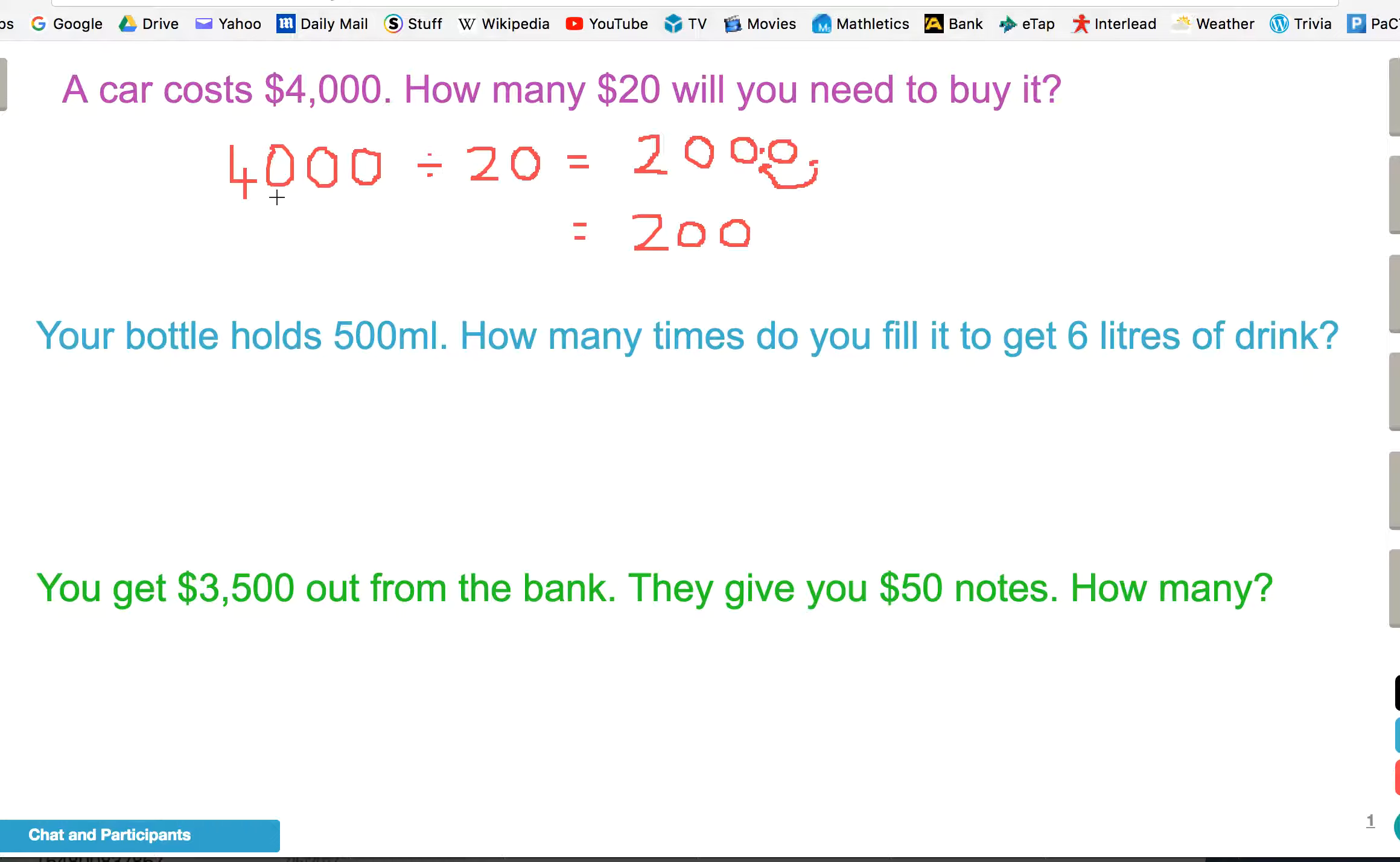So it's a basic fact, and then the opposite extension ladder. Let's look at the next one. Your water bottle holds 500 millilitres. How many times do you need to fill it to get 6 litres of drink? Well, 6 litres is 6,000 millilitres. So first of all, we need to make sure we convert our 6 litres to millilitres. And we want to see how many times do we have to fill our 500 mil bottle to get 6,000 millilitres?